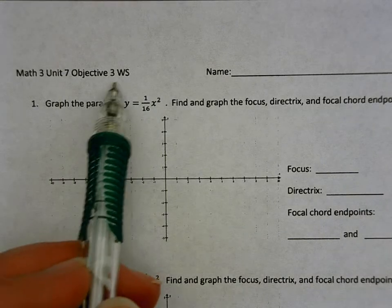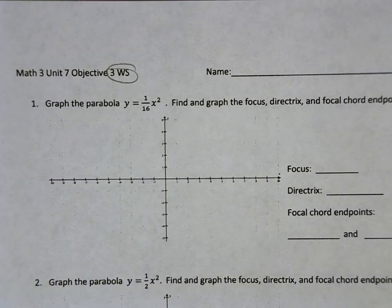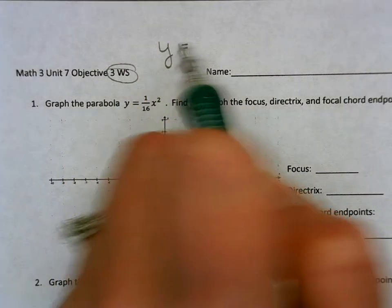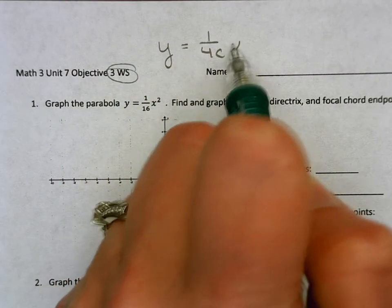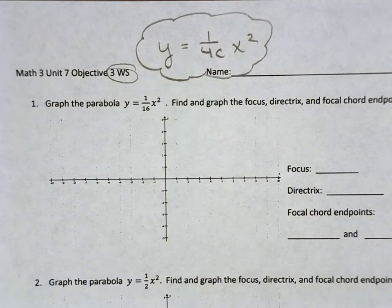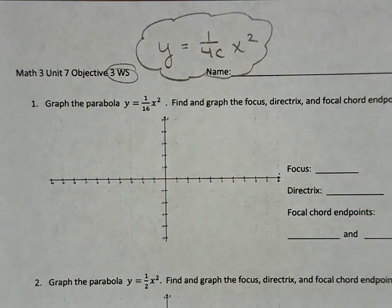So this is homework help for worksheet 3. Before we get started, just a reminder that the formula we need to always remember when doing parabolas with vertex at (0,0) is that y equals 1 over 4c x squared.